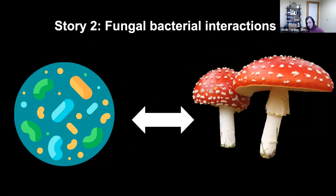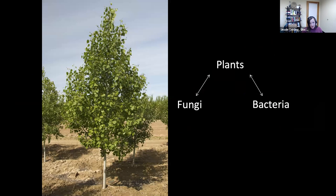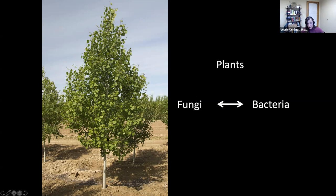The fungi I'm going to talk about today are plant-associated — they're all isolated from the roots of poplar trees. The work is supported historically by the Department of Energy, and they're very interested in poplar trees because that's where all of our paper and cardboard pulp comes from, and it's also a source of alternative energy research. We know that plants have a lot of fungi and bacteria that interact with them directly, but what I'm interested in is this side of the triangle — the fungal bacterial interactions.